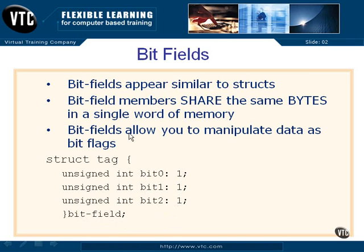So those are bit fields — esoteric little things that are available in C because C is such a low-level system language that can be used down tight to the hardware. We want to give you these sorts of structures that you can work with at the hardware level. So that's a bit field.